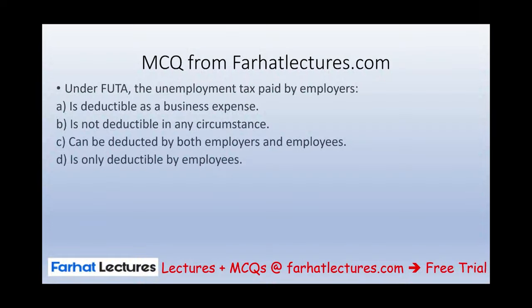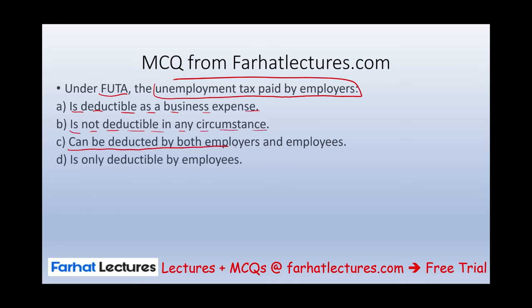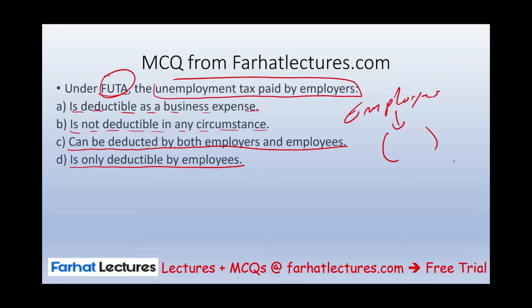Let's look at a multiple choice question from farhatlectures.com. Under FUTA, the unemployment tax paid by an employer is: (A) deductible as a business expense, (B) not deductible in any circumstances, (C) can be deducted by both employer and employee, or (D) not deductible by employees. Who pays FUTA? Only employers. If they pay it, they can deduct it. Therefore, it's a deductible business expense — a necessary payroll cost to run your business, so that if the company lays off employees, those employees can collect from the insurance program administered by the state.